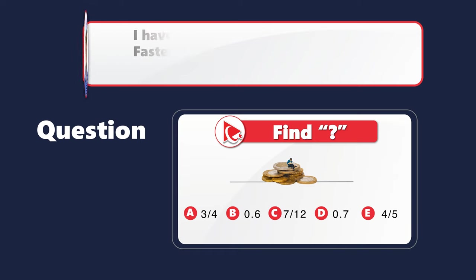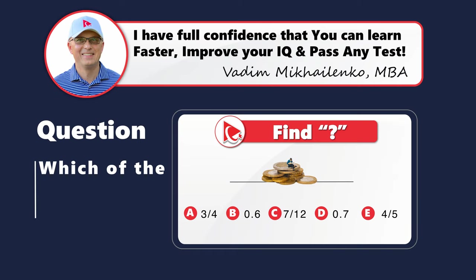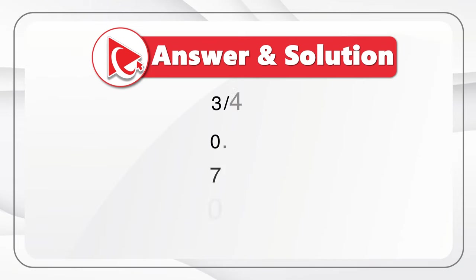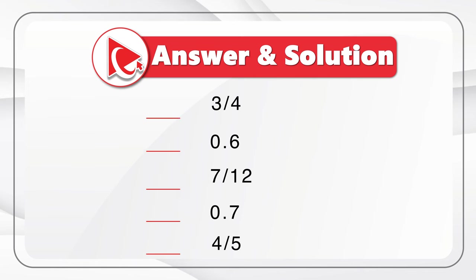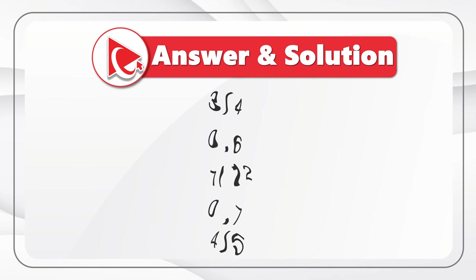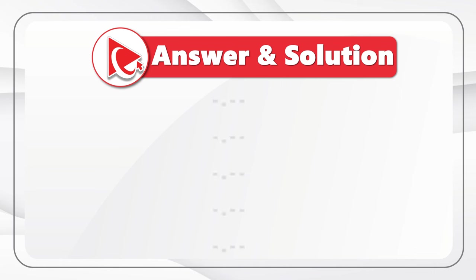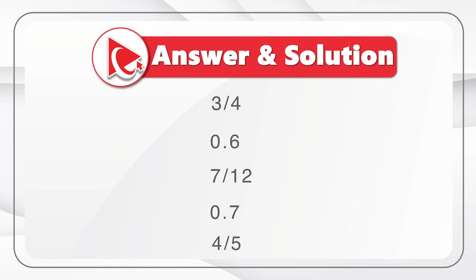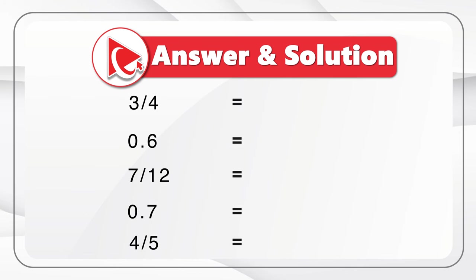Did you figure it out? To get to the correct answer, we need to convert all values to a common format — either all decimals or all fractions. I chose decimal format: three-fourths in decimal is 0.75, and 0.6 is 0.6.